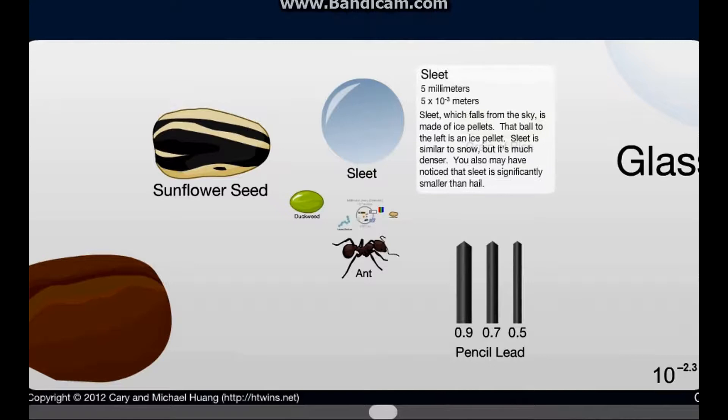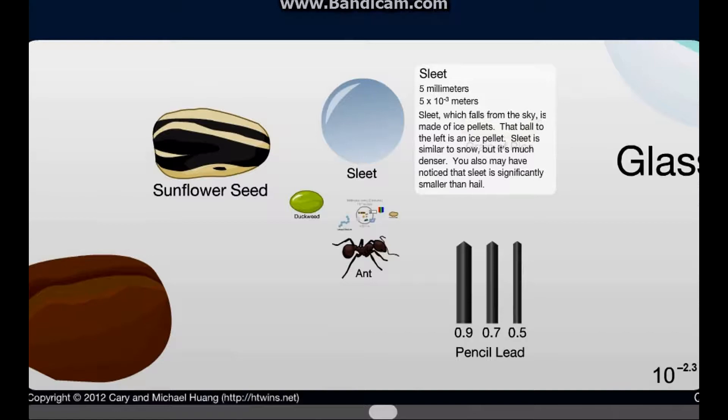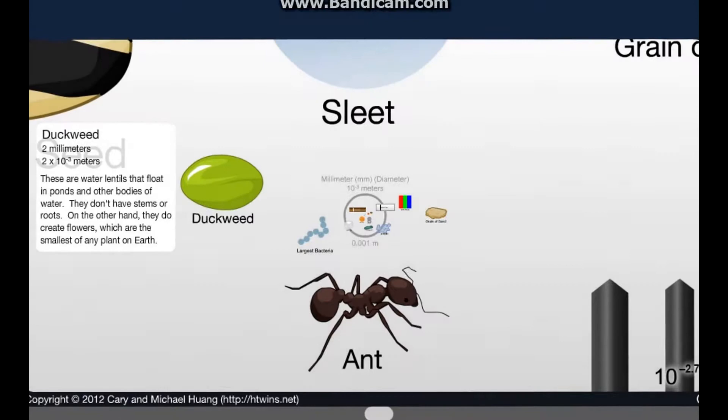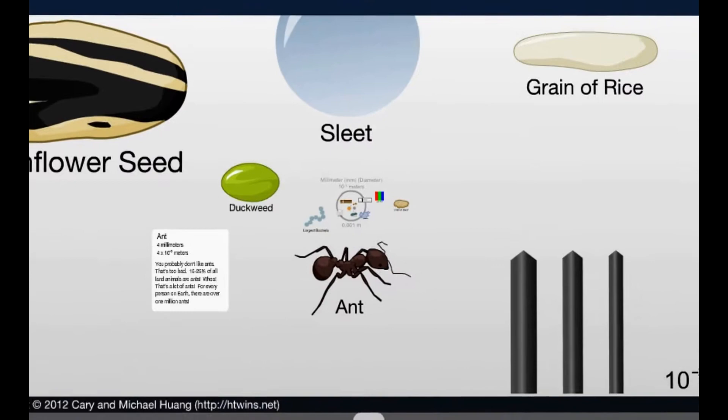Sleet. Sleet is only 5 millimeters, which falls from the sky and makes ice pellets. Yeah, I can see that. What's this? Duckweed. That's that little stuff that floats in the water, isn't it? Then you got an ant, 4 millimeters.